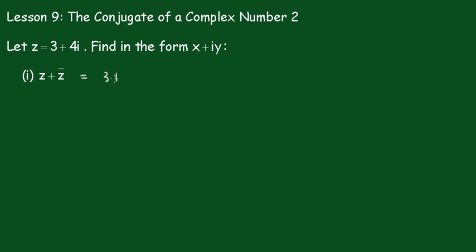We're going to get that as 3 plus 4i plus the conjugate which is 3 minus 4i, and in this case these go out and we just get the real number 6.